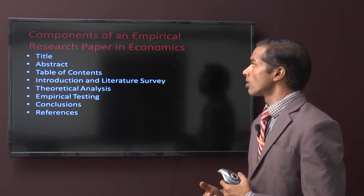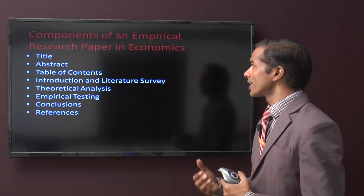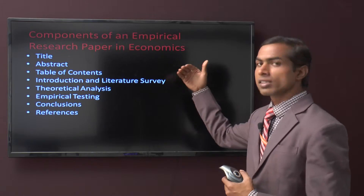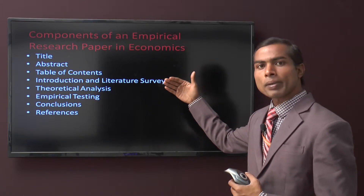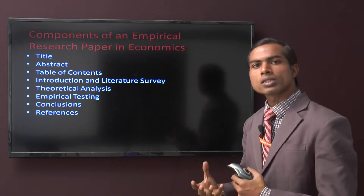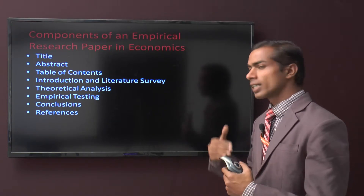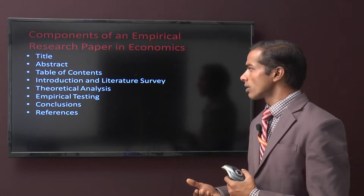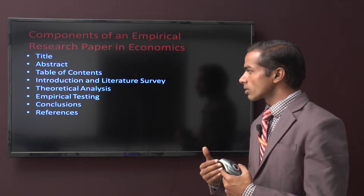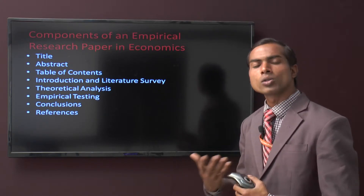The components of an empirical research paper in economics include: first, the title of your research topic, abstract, table of contents, introduction, and literature survey, then a theoretical analysis, empirical testing, conclusion, and last but not least, the references that you have used during your research.